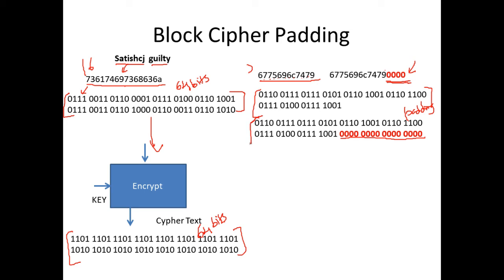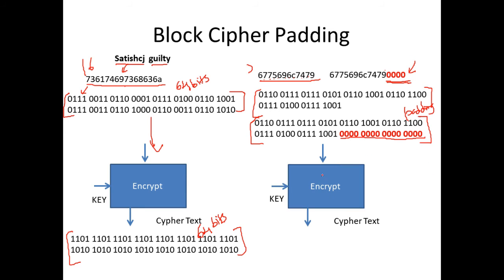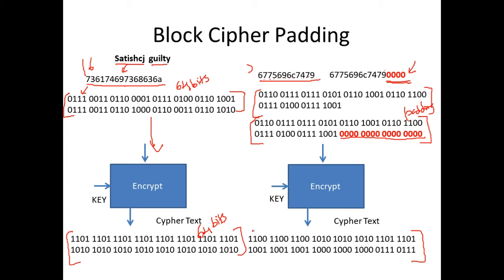Padding is necessary because every block must be 64 bits. This is considered a disadvantage of block cipher: if any block is shorter than the fixed size, you must add extra characters to reach 64 bits. Once padding is applied, you encrypt the block and get the ciphertext. When decrypting, you must ignore the padded bits to recover the original message.